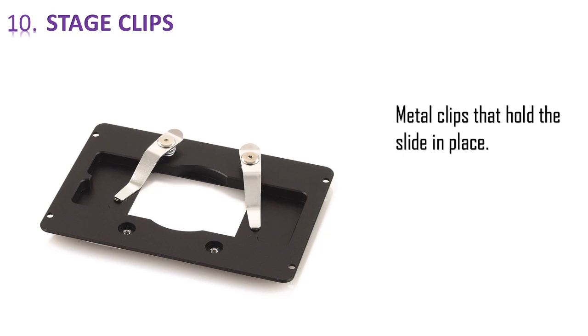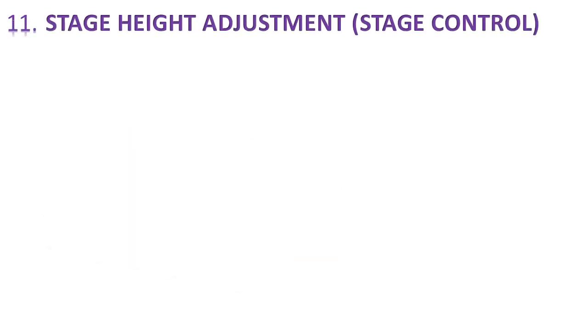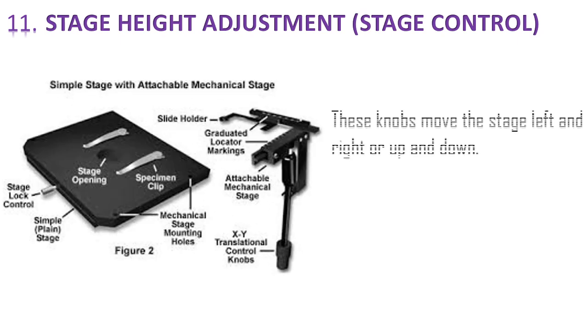They are usually metal clips or maybe plastic. And the 11th part of a microscope is stage height adjustment or stage control system, which is used to adjust the left and right position of the stage, or up and down adjustment in the stage. And which is graduated scale and a knob system which we can turn around for adjusting the left to right movement and up and down movement of the stage.